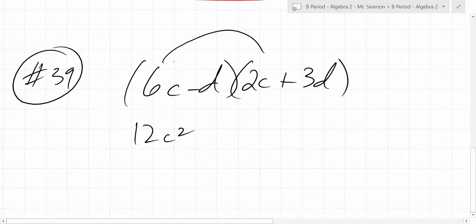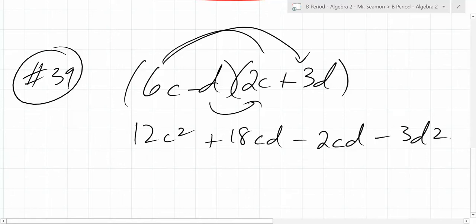So you get 12c squared, and then what? 18cd. Oh, so it's CD, yeah. That's what I got. Yeah, it's just CD. You can't do anything. Then it's going to be minus 2cd minus 3d squared. Why did I write it CD instead of DC? Simple reason. Alphabetical order. Just keep it, generally speaking, do it in alphabetical order.